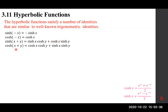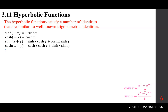For cosh, however, there is a key difference. In trigonometry, cosine of alpha plus beta equals cosine alpha cosine beta minus sine alpha sine beta. There are many similarities between the hyperbolic identities and the trigonometric identities, but also important differences to keep in mind.